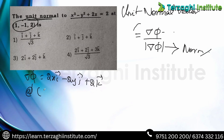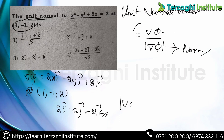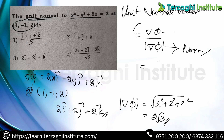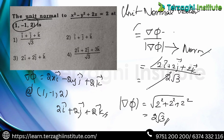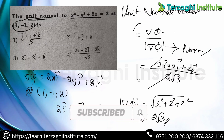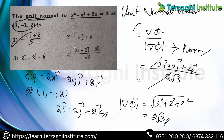At the point (1, −1, 2), substitute to get ∇φ = 2i + 2j + 2k. Modulus of ∇φ = √(2² + 2² + 2²) = 2√3. Unit normal = (2i + 2j + 2k) / 2√3. Factor out 2: (i + j + k) / √3. Answer is option 1 — be careful, similar options exist but 2 cancels.